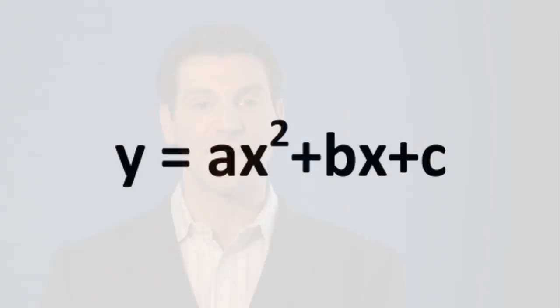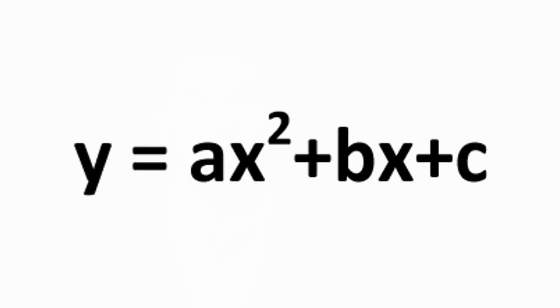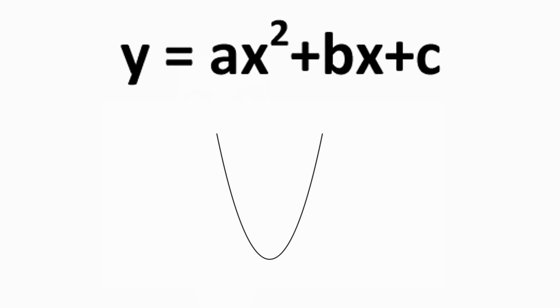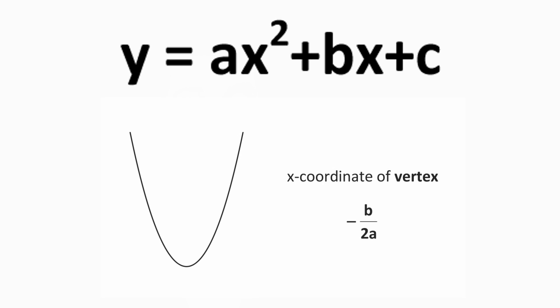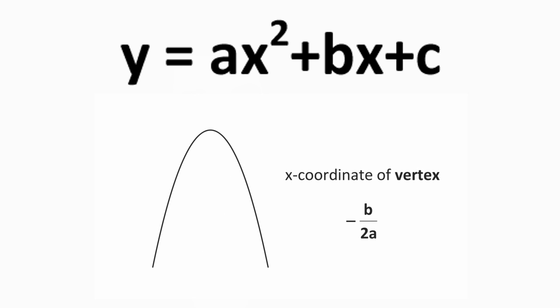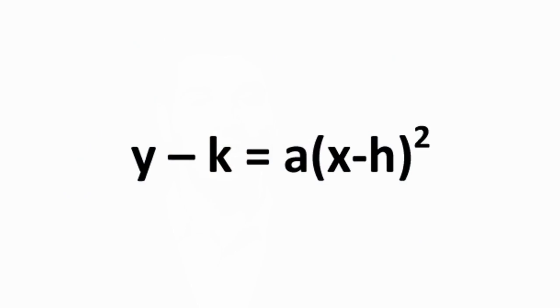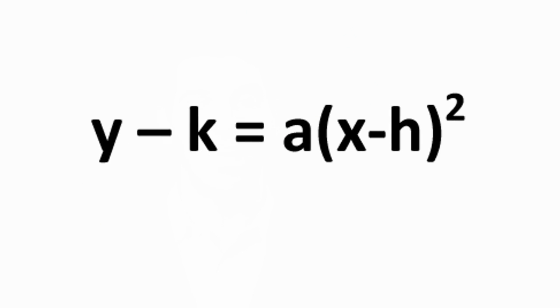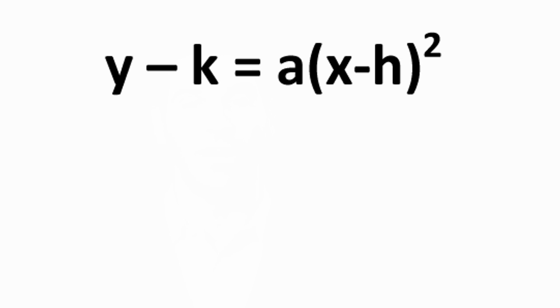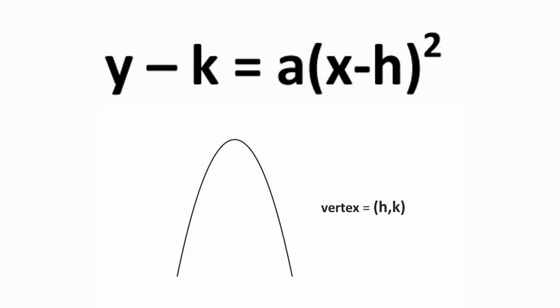Now we're getting into some real technical stuff, but once learned, these formulas can become second nature in a matter of moments. The general form for a quadratic function is y equals ax squared plus bx plus c. The graph of this function is a parabola whose vertex has x-coordinate negative b over 2a. The parabola opens upwards if a is greater than zero and downwards if a is less than zero. The standard form is y minus k equals a times x minus h squared, with vertex at (h, k).